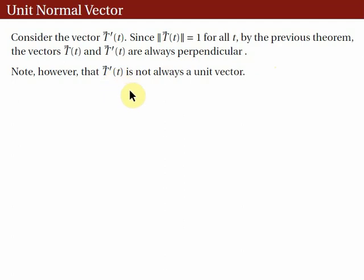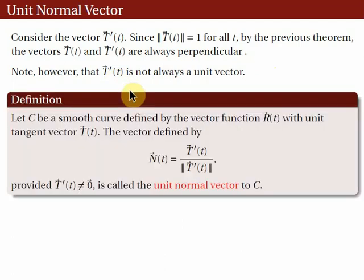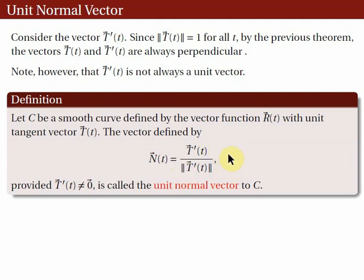Note that T'(t) is not always a unit vector. So let c be a smooth curve defined by the vector function r(t) with unit tangent vector T(t). The vector defined by N(t) = T'(t) / ||T'(t)||, provided that T'(t) is not the zero vector, is called the unit normal vector to c. Essentially, we normalized T'(t) by dividing by its norm to obtain a unit vector with the same direction as T'(t). So N and T are always orthogonal.